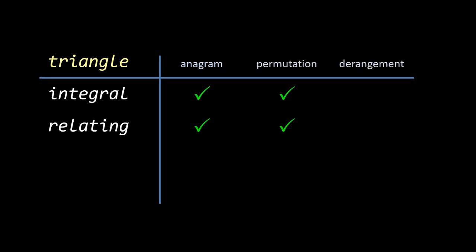What about the derangement property? In integral, all the letters have moved to a new position, so this is indeed a derangement. Relating however has an A on the fourth position, just as triangle does, so relating is not a derangement.